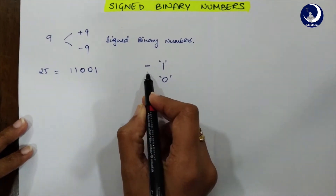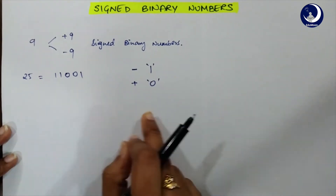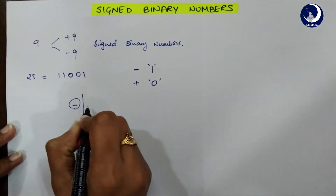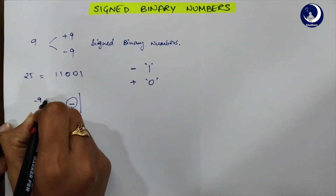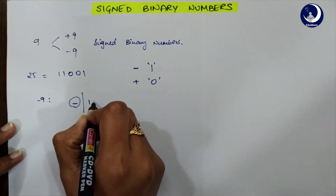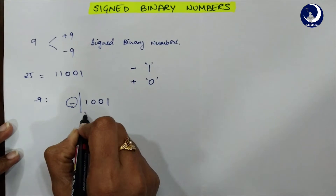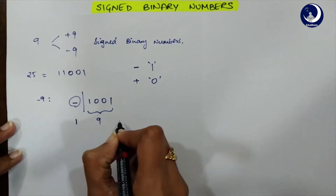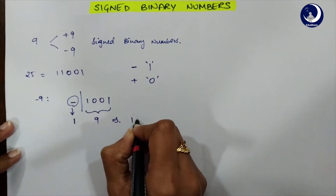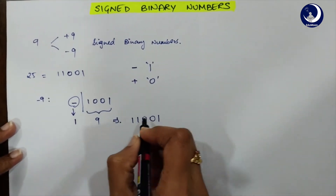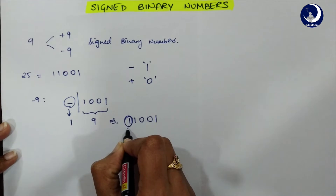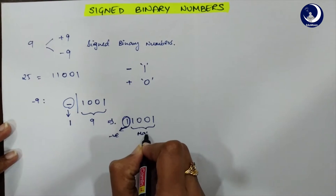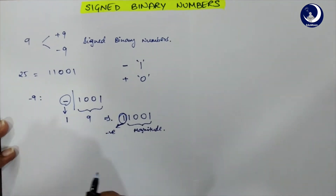Where do we place this 1 and 0 for notation? The leftmost bit for all values will be your sign bit. For example, consider minus 9 — how do we represent minus 9? It is 1 0 0 1. This value represents 9, and to denote the negative symbol we use 1, so it becomes 1 1 0 0 1. The most significant bit, which is the leftmost bit, denotes the sign and the remaining bits show the magnitude.